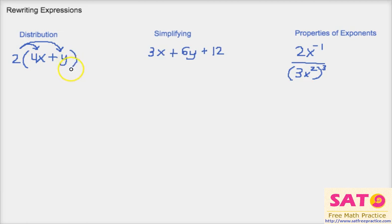So if we wanted to rewrite this expression we would write it as 2 times 4x plus 2 times y. And then we can simplify it by saying 8x plus 2y. And that would be one way we could rewrite an expression.